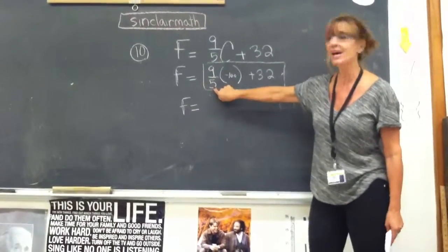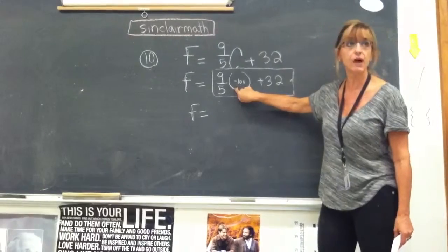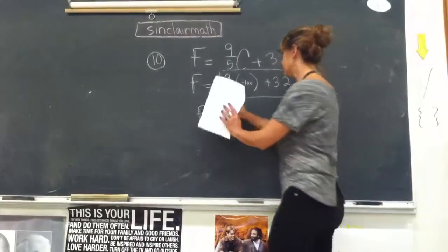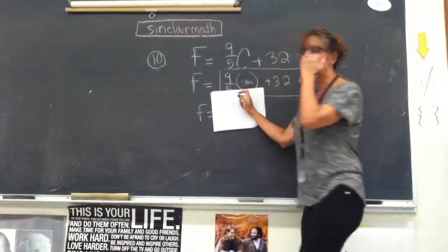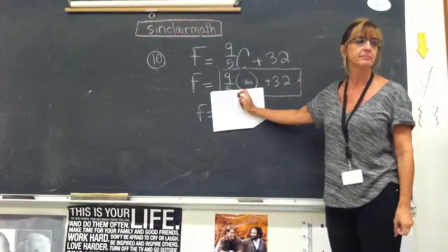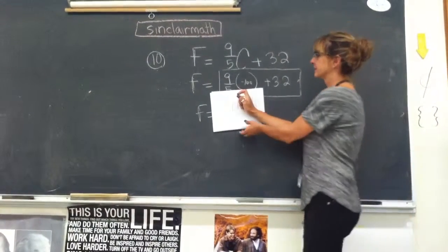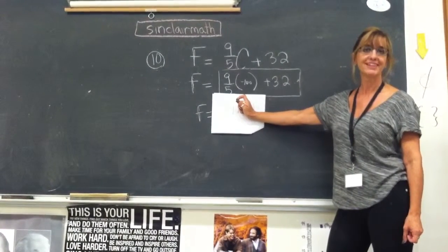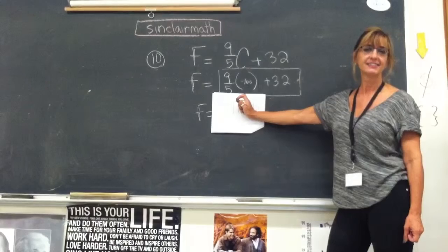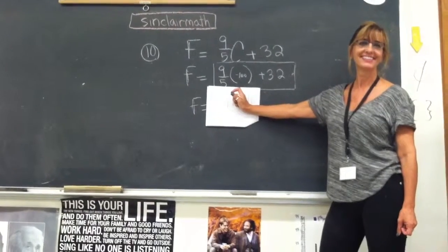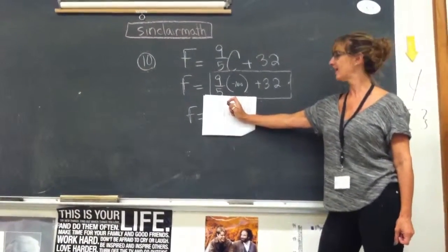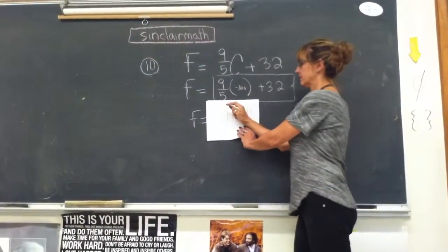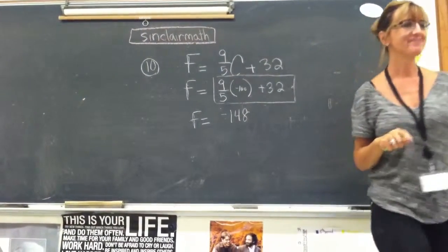When you type this in, I want you to practice typing 9 fifths times negative 100 plus 32 and see what you get. I'll give you a couple of seconds. 9 fifths times negative 100 plus 32. I got negative 148. Correct. Perfect.